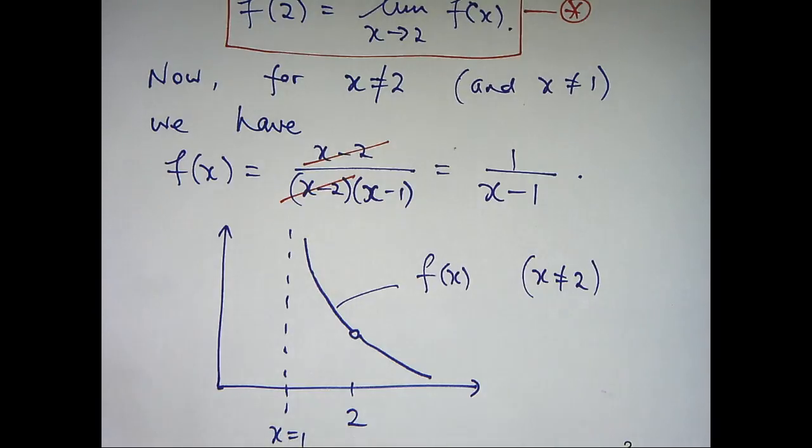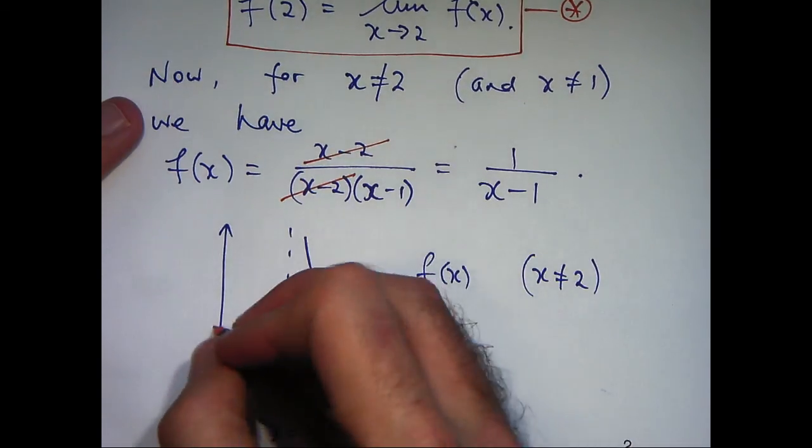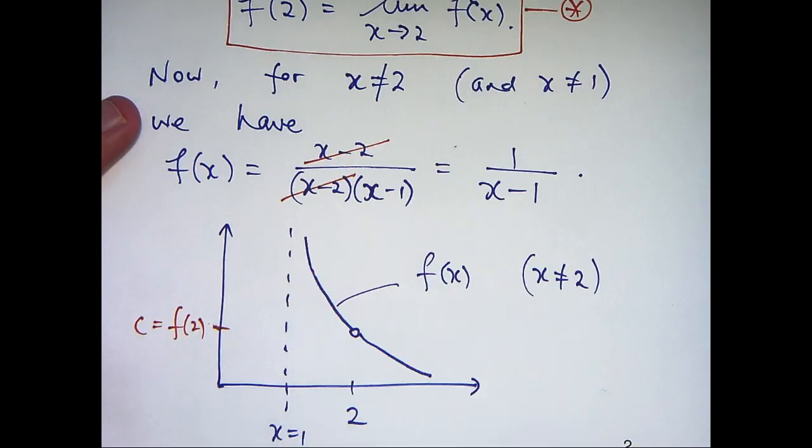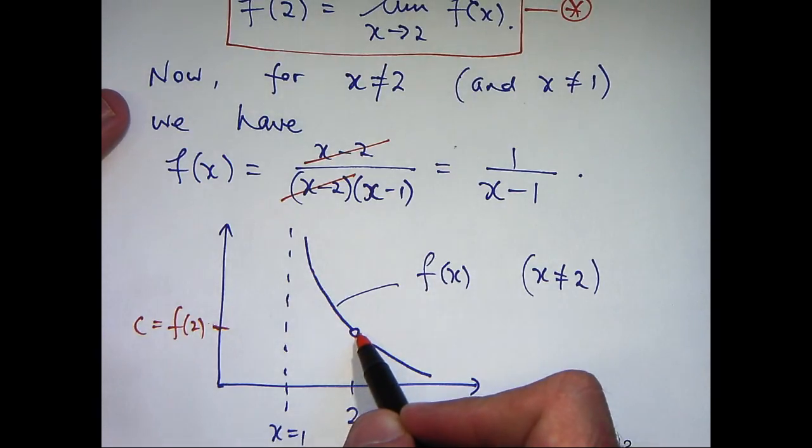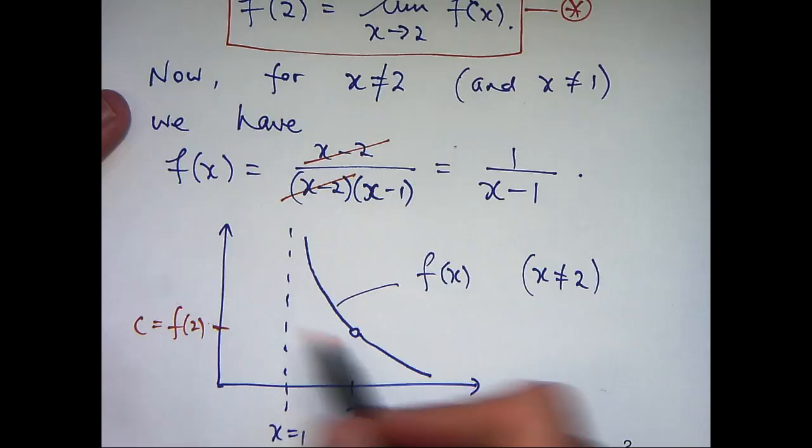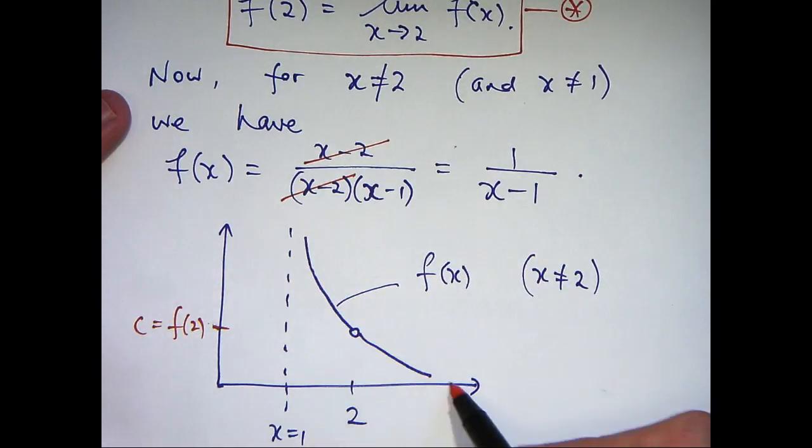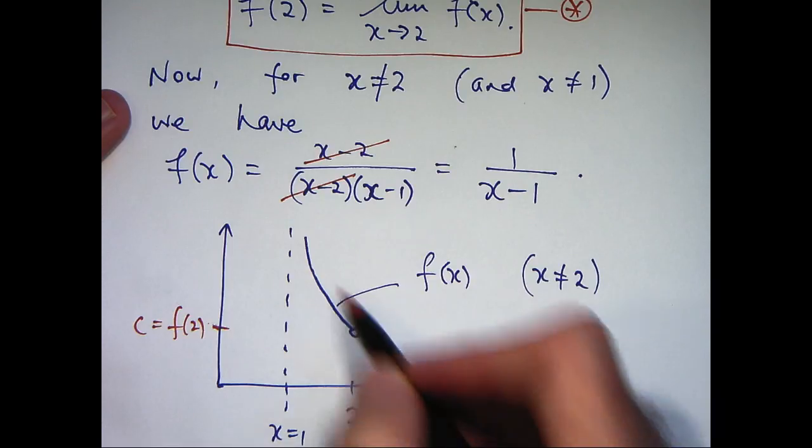Now, what we are trying to do here is to plug this little hole by giving c some value such that it will make the whole graph continuous.